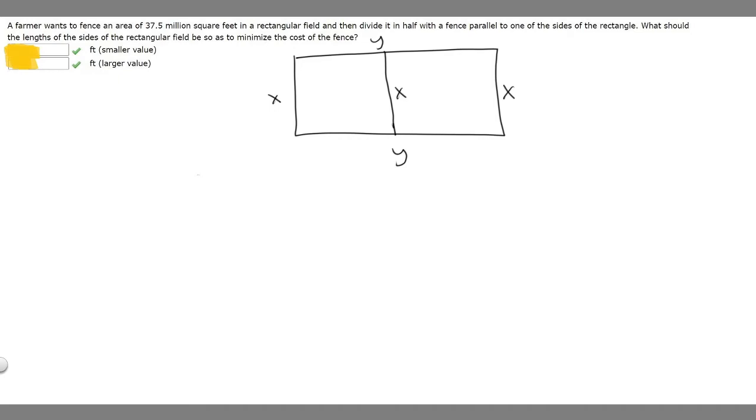If we were trying to find the area of this, we know that x, this side, times this side, which is y, is equal to our area. And it tells us what the area is. It's 37,500,000.